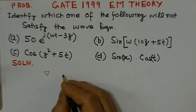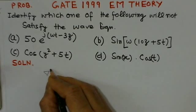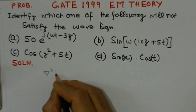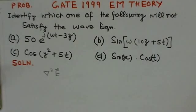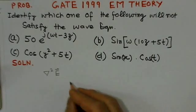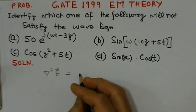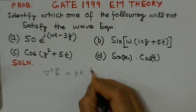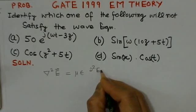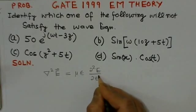Wave equation is written as del square E. If it is in terms of the electric field, we are writing the wave equation as del square E equals to mu epsilon delta 2 E over delta T square.